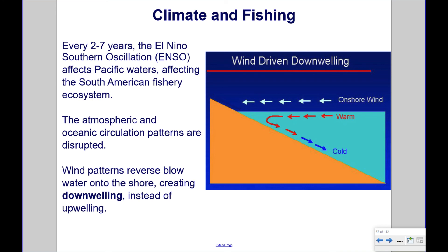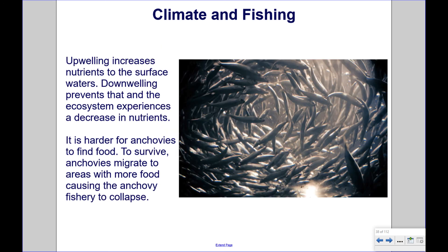Every two to seven years, the El Niño-Southern Oscillation (ENSO) affects Pacific waters, affecting the South American fishery ecosystem. The atmospheric and oceanic circulation patterns are disrupted. Wind patterns reverse, blowing water onto the shore, creating downwelling instead of upwelling. Downwelling prevents nutrients from reaching the surface and the ecosystem experiences a decrease in nutrients. It is harder for the anchovies to find food, and to survive, anchovies migrate to areas with more food, causing the anchovy fishery to collapse.